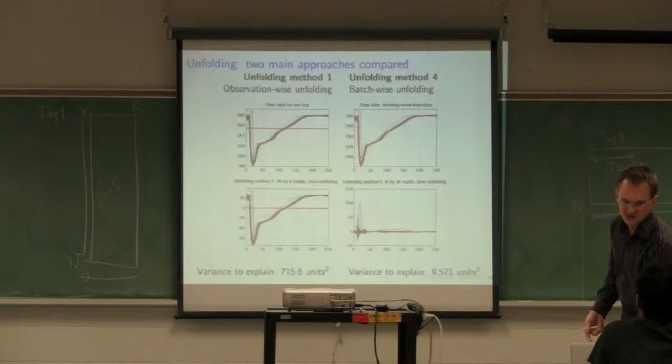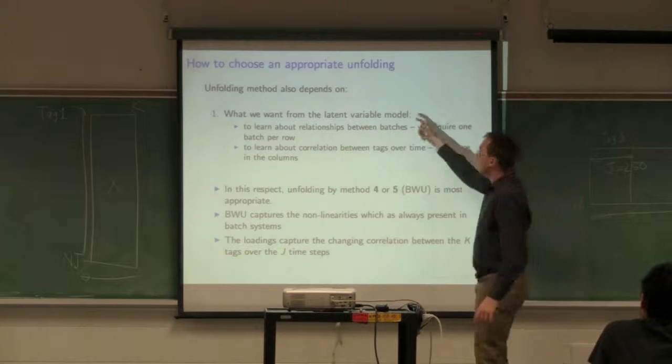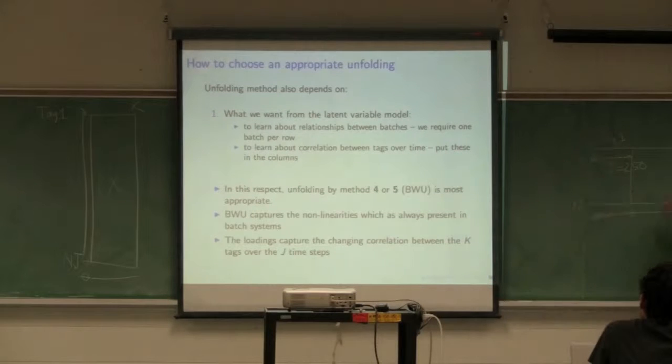I want you to be aware that when you choose your unfolding method, a big decision is going to be affected by how you preprocess your data and what preprocessing does. In this case, preprocessing removes a whole lot of uninteresting variation, and that's a good thing. Next, after preprocessing, you have to ask what do I want to get from this model? When we've unfolded this way, we're going to get scores, SPE values, one score for every batch.